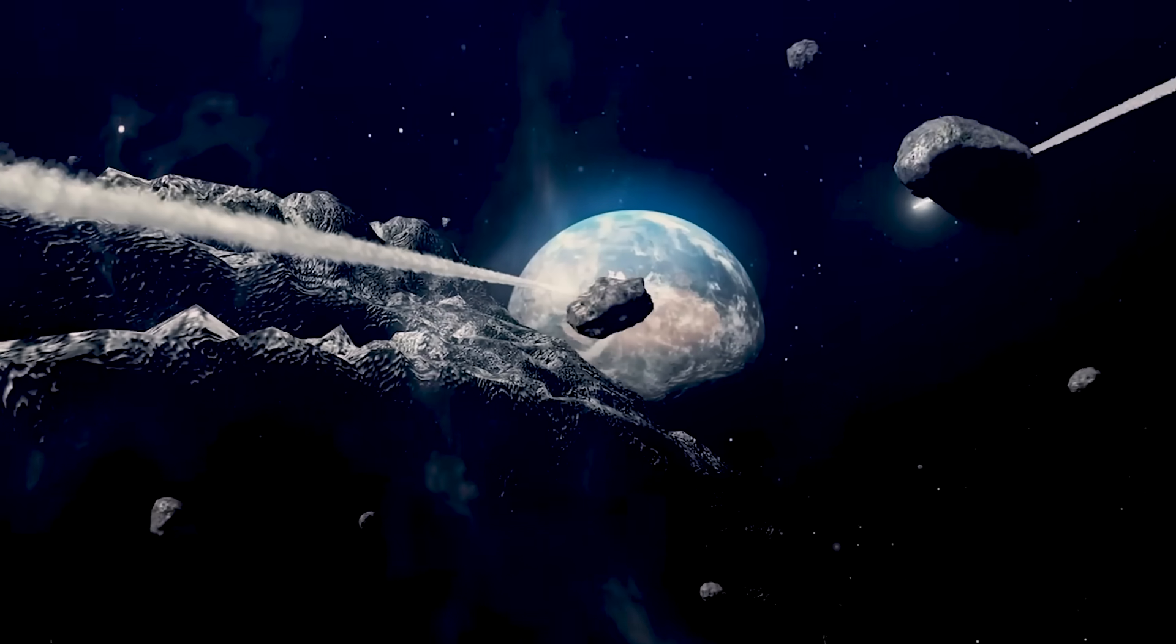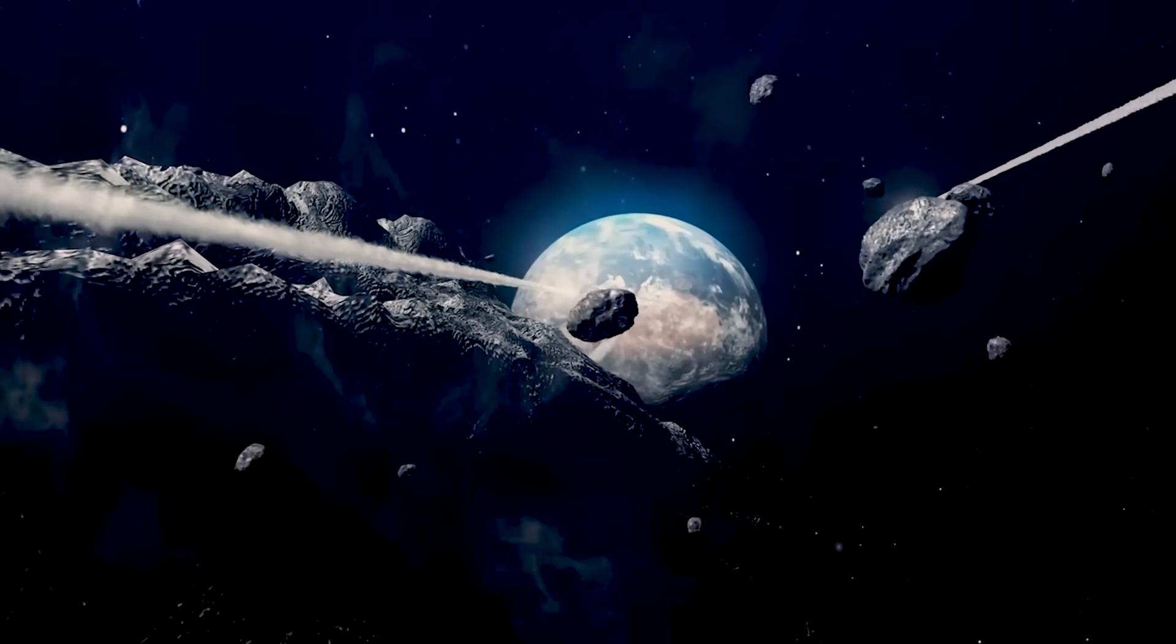The asteroid that hit Earth 66 million years ago came from a similar trajectory, falling inward toward the sun before being pulled into Earth's path. At first, it wasn't even aimed at Earth, but it turned. Kaku points to that pattern. Objects heading toward the sun often appear harmless, until they're not.